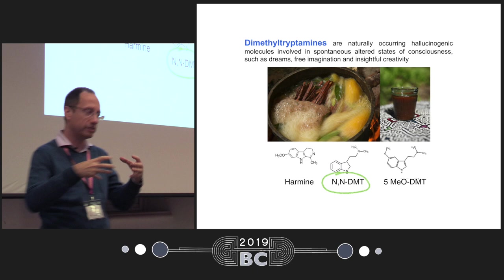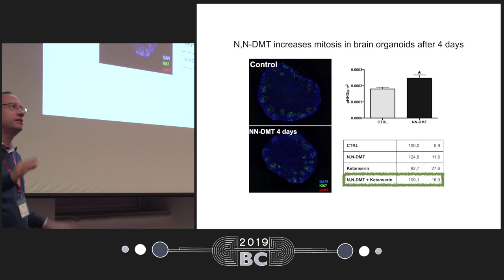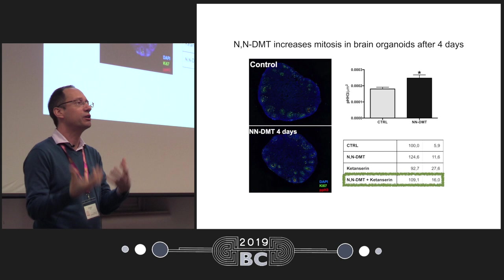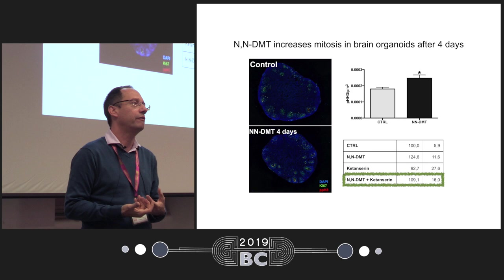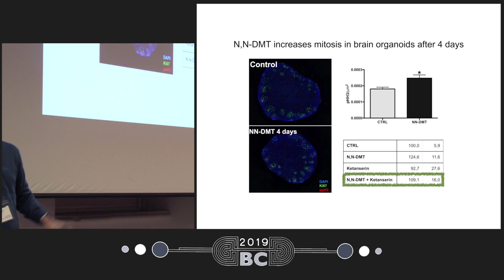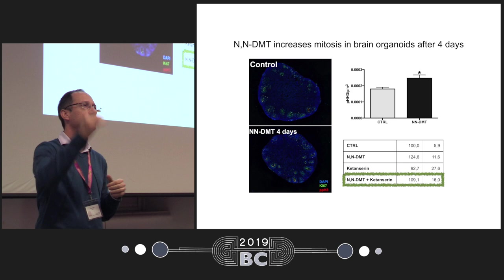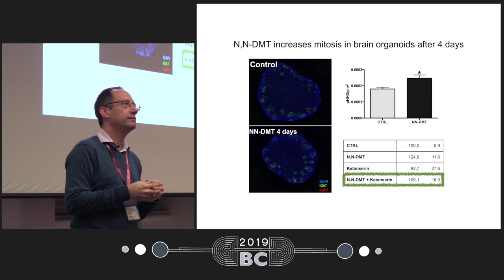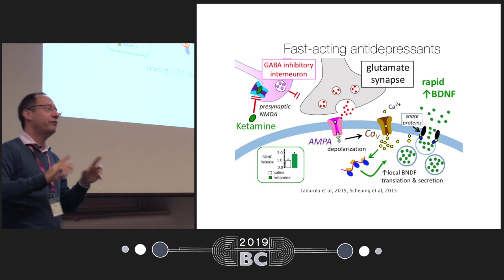Now let's move to the second compound of ayahuasca: N,N-DMT, the compound that usually gives us the psychedelic effect. Using the same approach — brain organoids exposed to N,N-DMT — we found an increase in proliferation as well: neurogenesis is also increased in the brain organoids. Thinking about the antidepressant effects of ayahuasca, this could explain what we see in subjects consuming ayahuasca. What's interesting in that data is that if you block the serotonin receptor, you block the neurogenic effect — so the N,N-DMT-induced increase in neurogenesis depends on the serotonergic receptor.